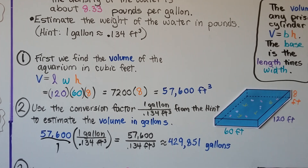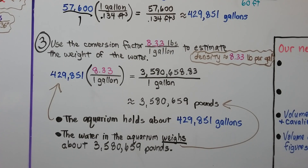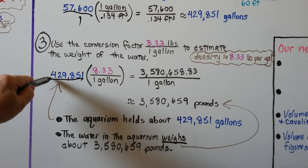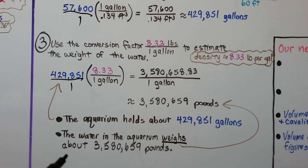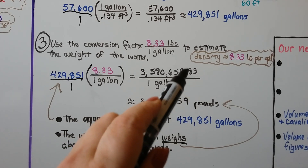We know the density is 8.33 pounds per gallon, and we know the aquarium holds about 429,851 gallons. Multiplying: 429,851 × 8.33 ≈ 3,580,658.83 pounds. Rounding to the nearest pound, the water in the aquarium weighs about 3,580,659 pounds. The 0.83 rounds the last digit up to 9.